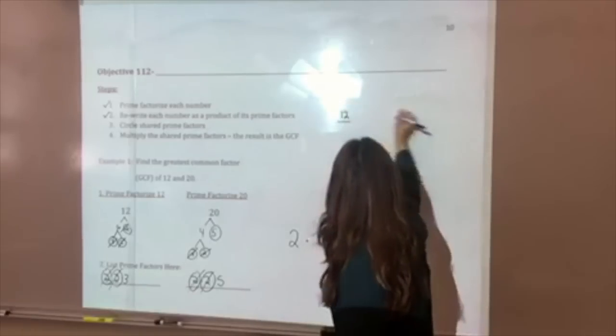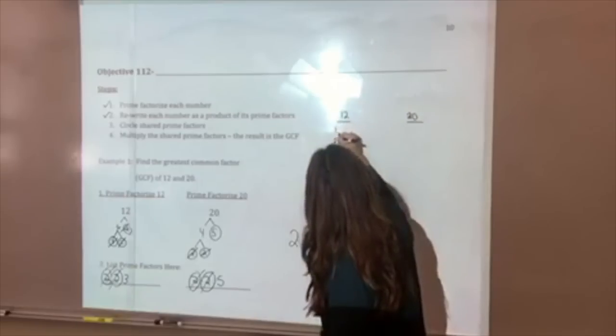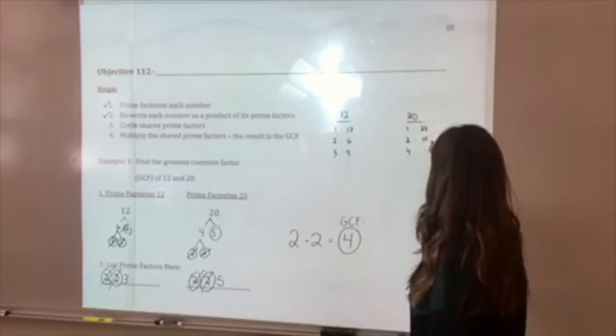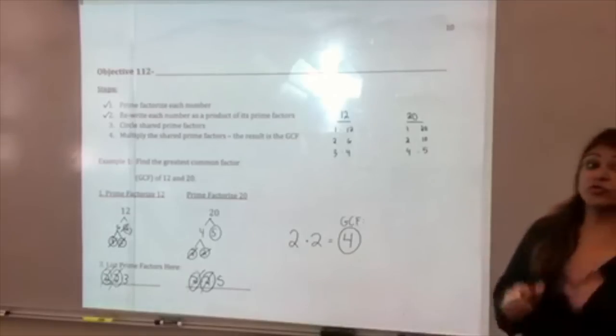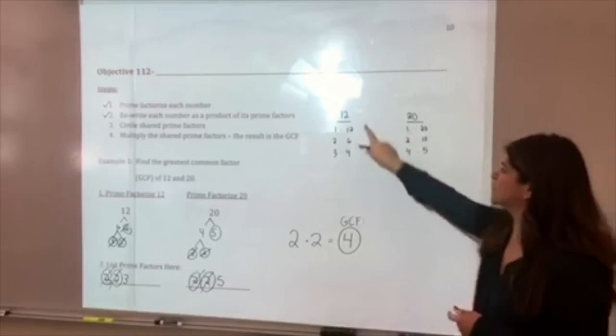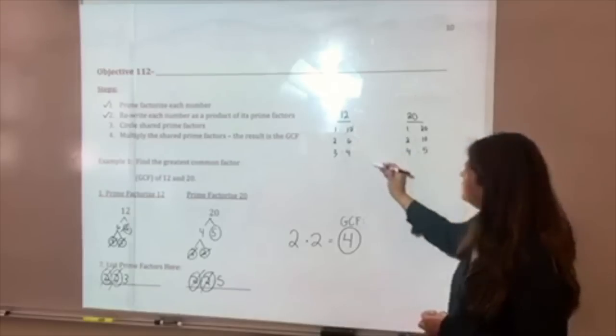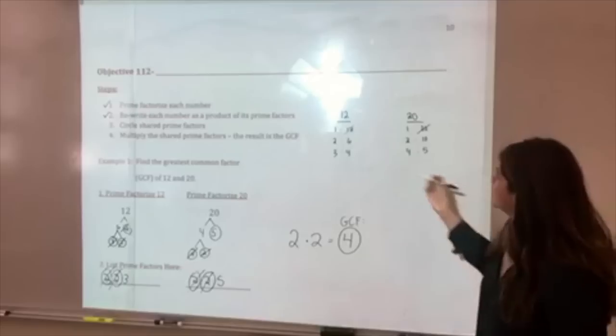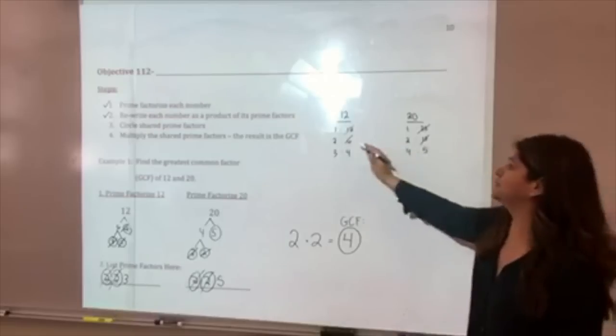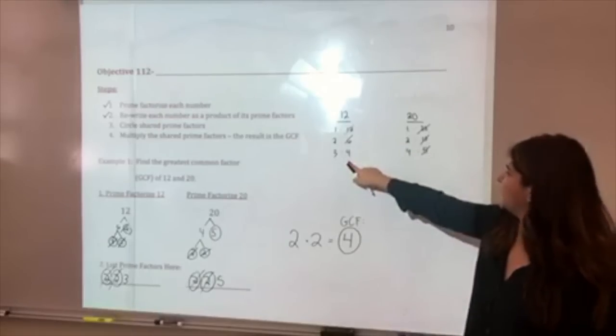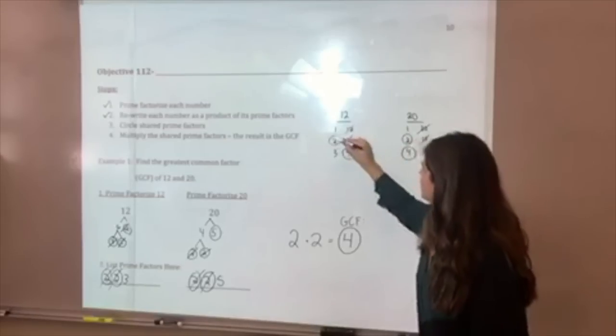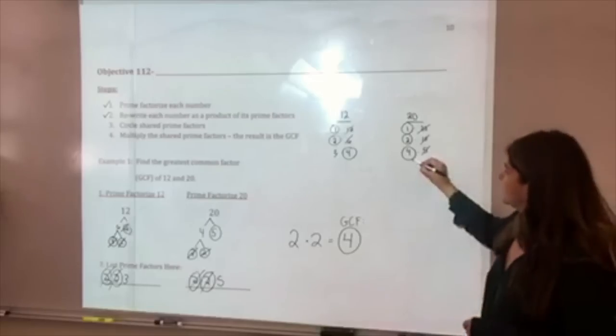For 12, we'll have 1 times 12, 2 times 6, and 3 times 4. For 20, we're going to have 1 times 20, 2 times 10, and 4 times 5. And now I'm looking for the greatest. So even though we both have 1, it's not the largest. So let's start off at the larger end of the list. 12 is here, but there is no 12 factor here. We have 20 here, but we don't have 20 there. We're looking for the greatest common or shared. We have 6 here, but we don't have 6 here. We have 10 here, we don't have 10 here. 5 here, we don't have 5 here. And now I see that we have 4, we have 2, and then we have 1. And the greatest of those will be 4.